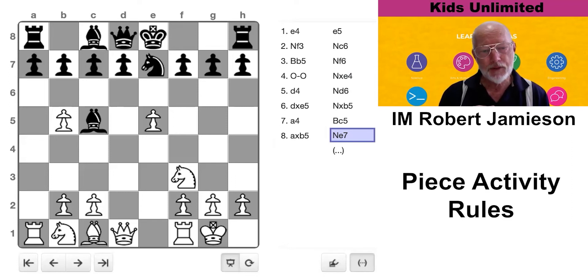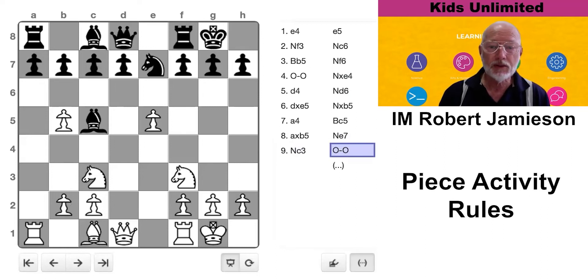Look for moves that are going to put him under more pressure. For instance, here I have to choose between knight c3 and rook e1. Which one would you choose? Some of my students chose rook e1, but knight c3 gives me the chance to put him under more pressure, as we'll see in a second, because he just castles.